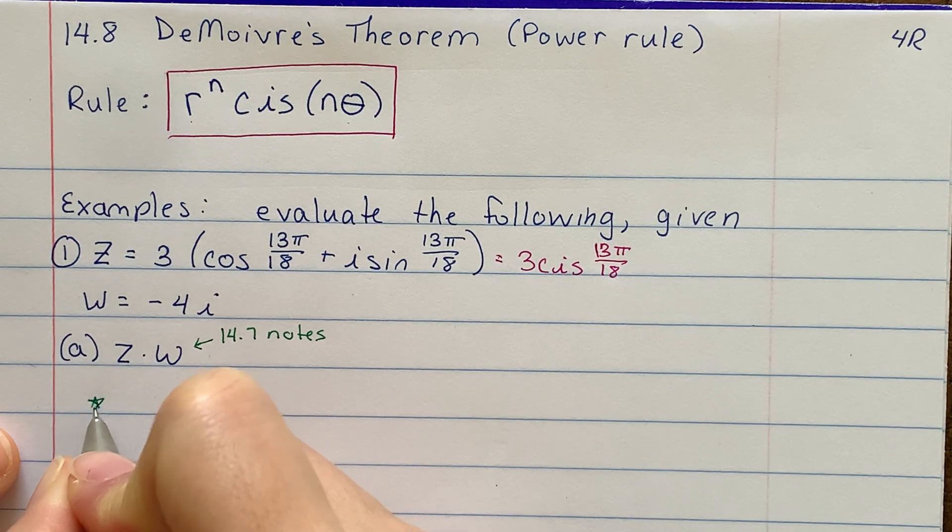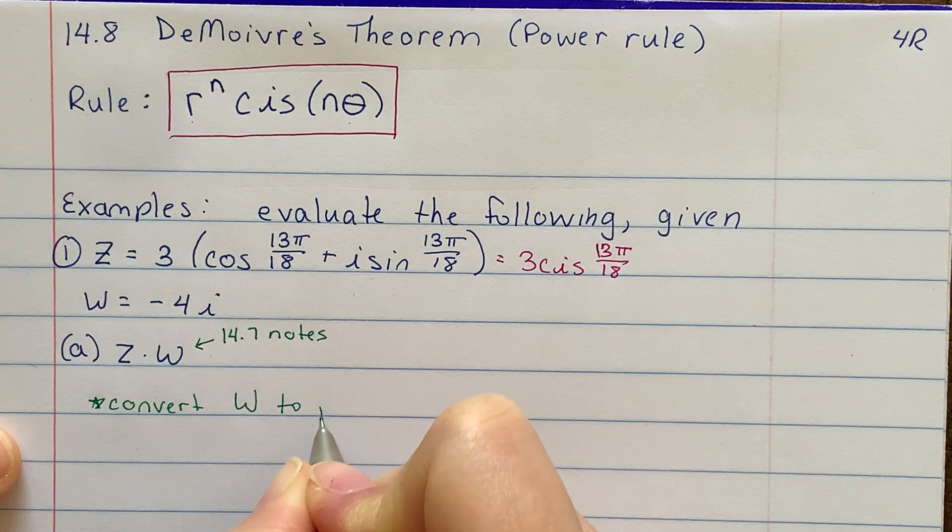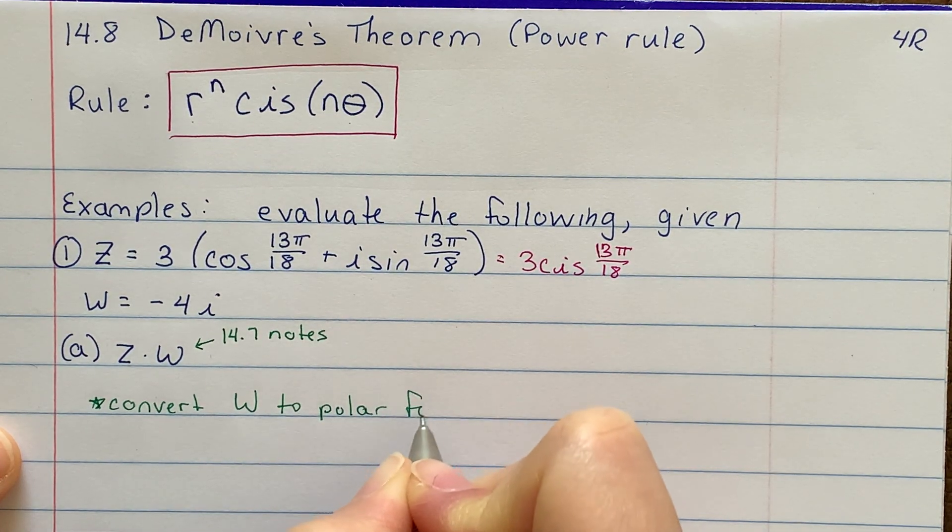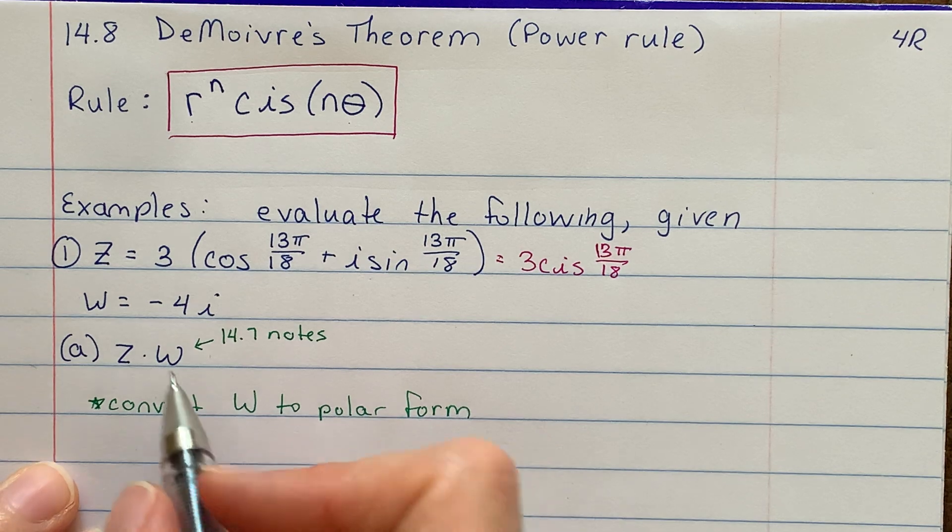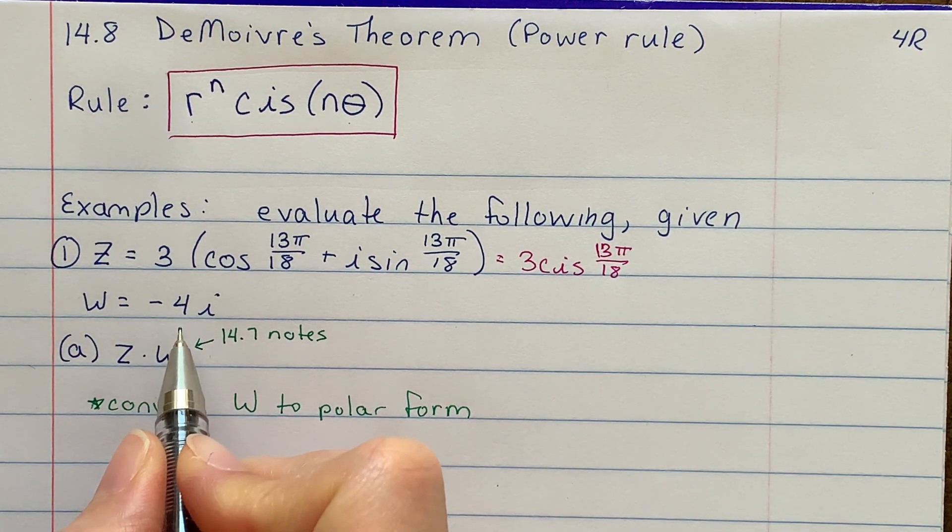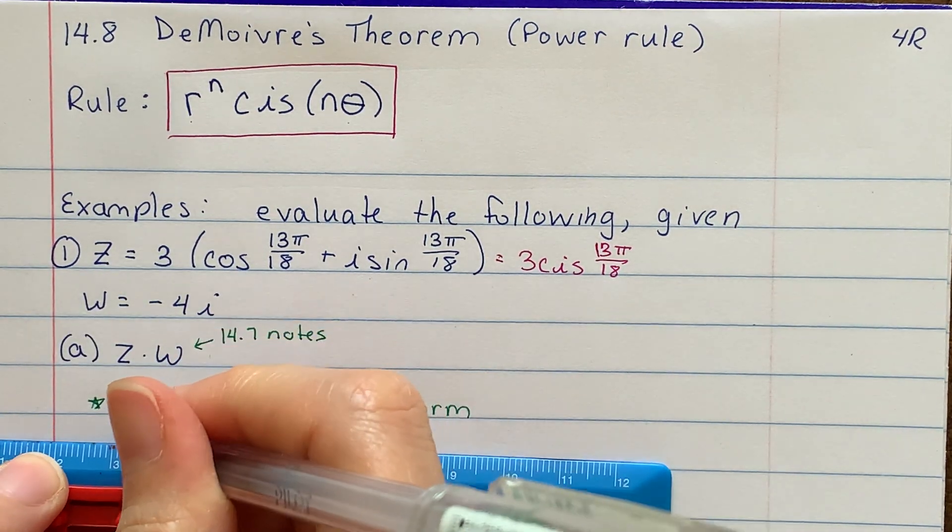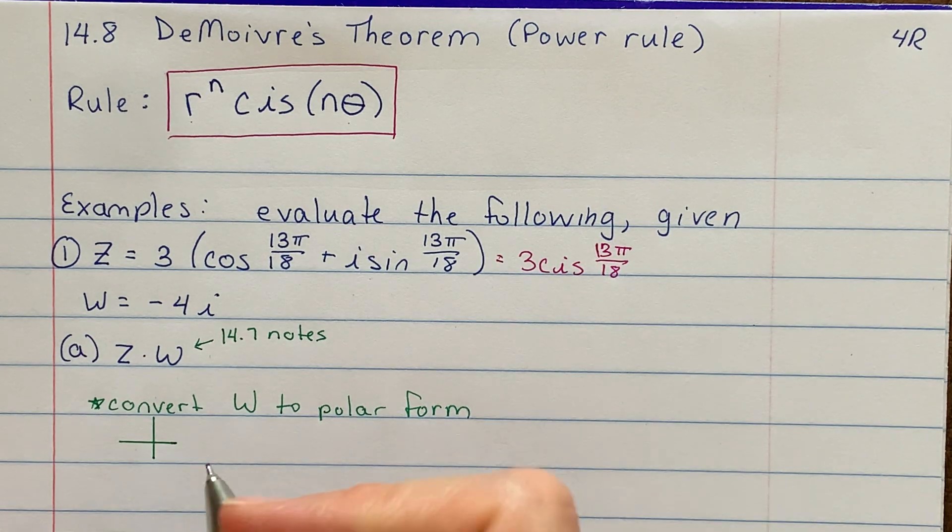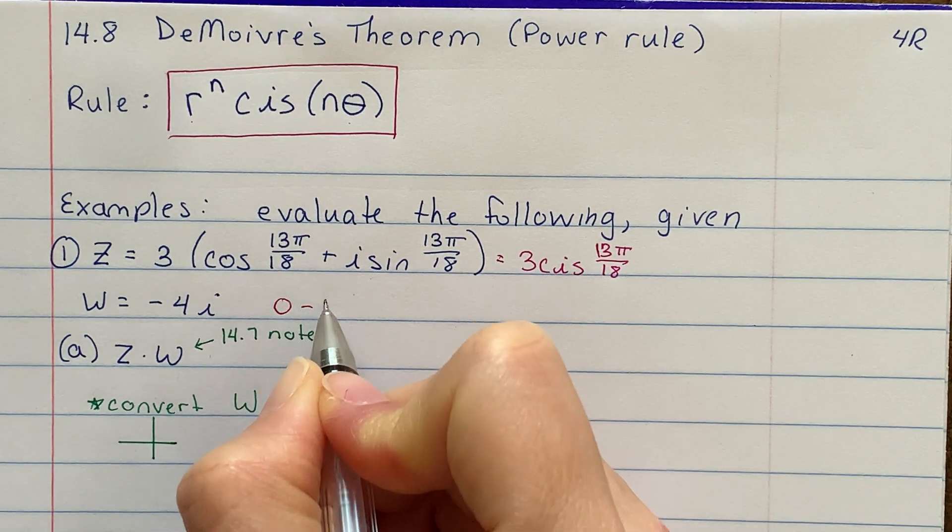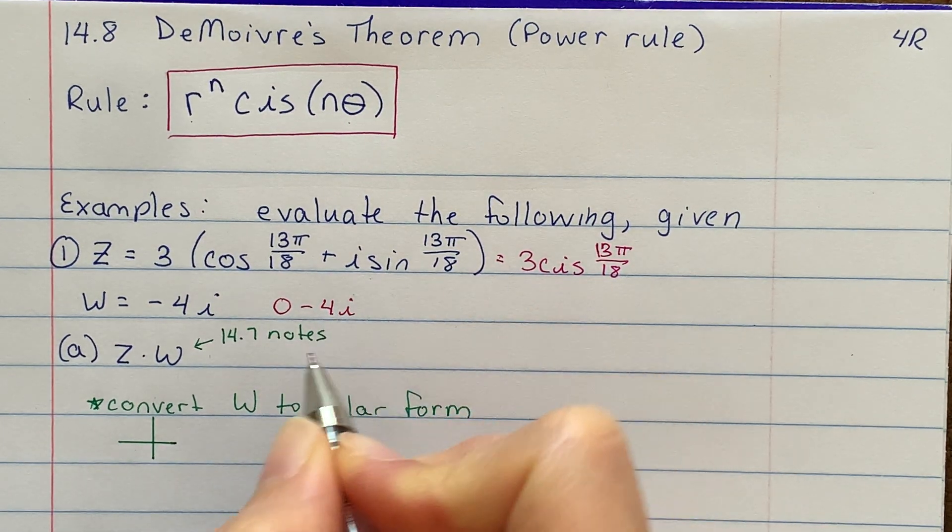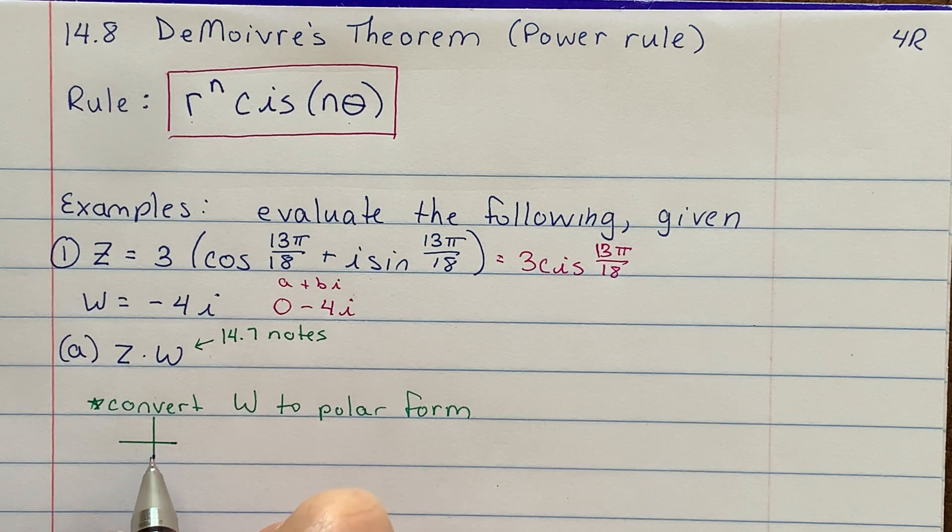This is the same thing as 3 cis 13π over 18. So I've got one r value, but over here, I don't have cosine and sine. Now remember, before you use these rules, these need to be in polar form. So the problem that I have is I need to convert this to polar form. So I need to go ahead and do that first. So I'm going to put a little star here. I need to convert w to polar form. That's my first hurdle that I have to jump over. So let's see if I remember the steps. So the first thing I'm going to do is plot negative 4i. So I'm going to take my ruler here, and I'm going to graph where negative 4i would be located.